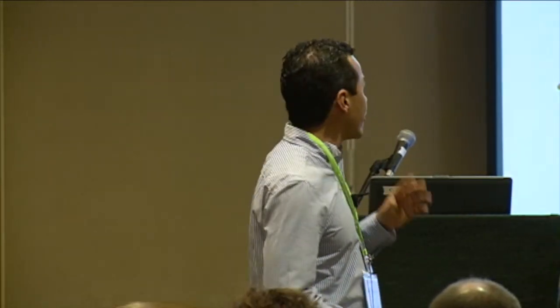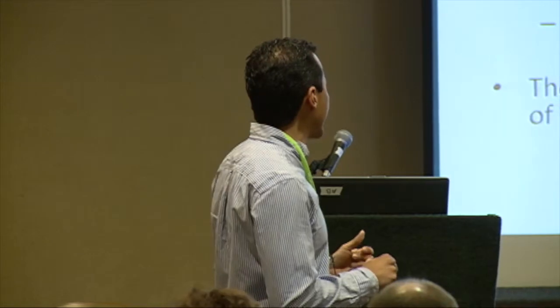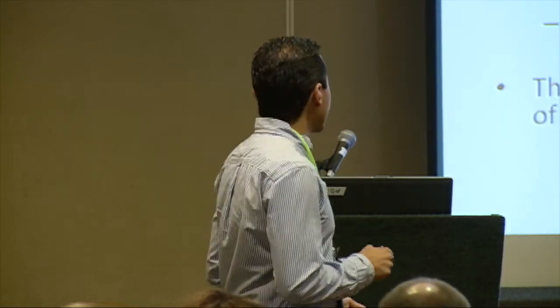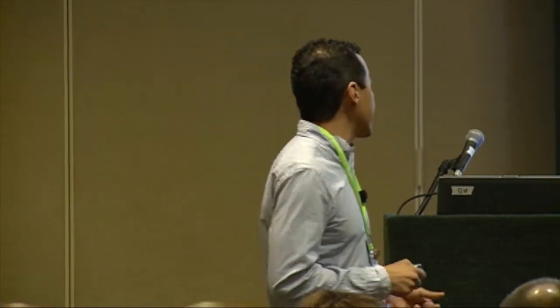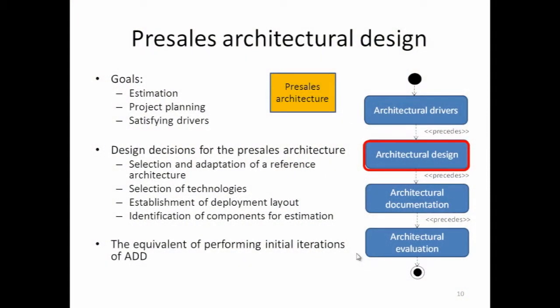For architectural design in the pre-sales phase, the goals are primarily estimation, project planning, and trying to satisfy at least initially the architectural drivers. Given the very limited time, architects won't go into much detail. The big decisions they make are: selecting and adapting a reference architecture, selection of technologies, establishment of a deployment layout, and the identification of components for estimation.